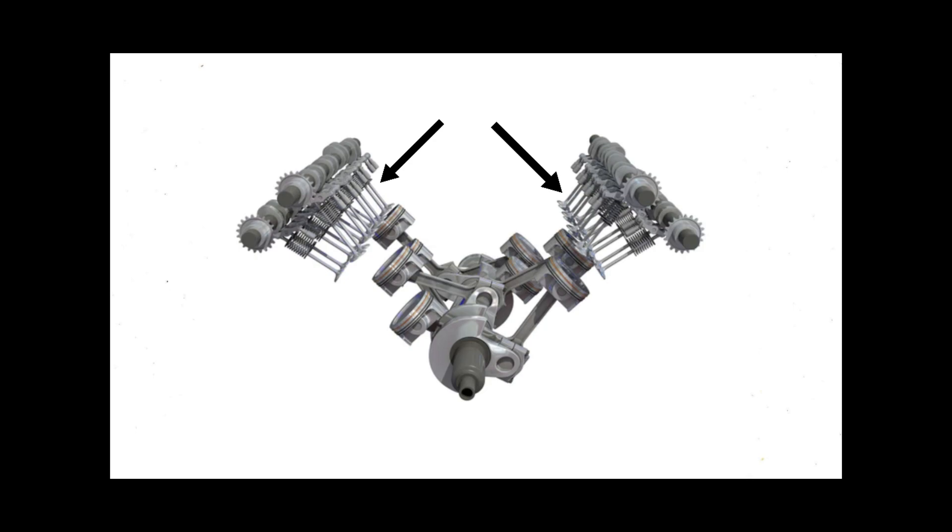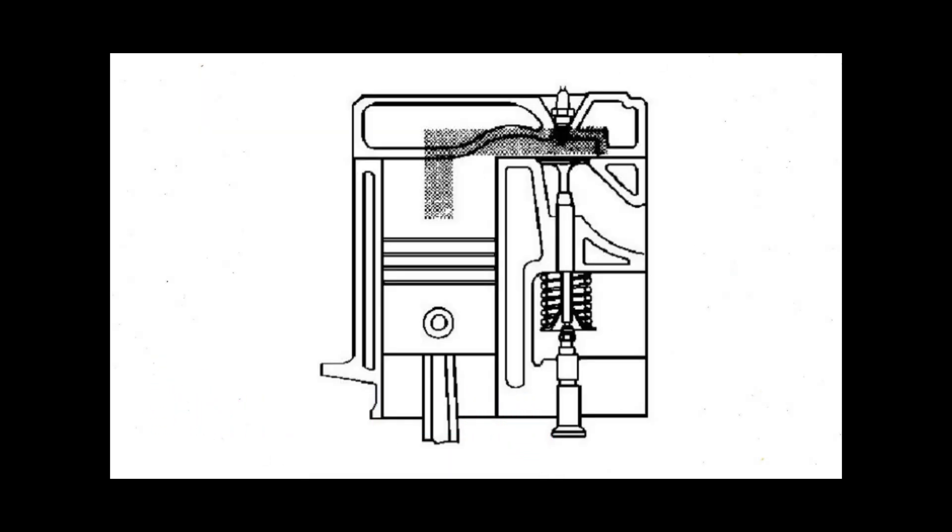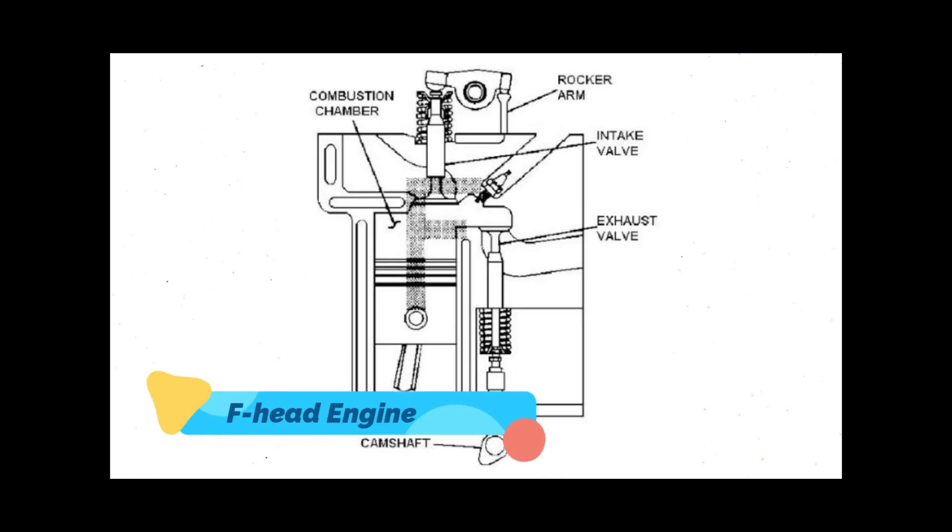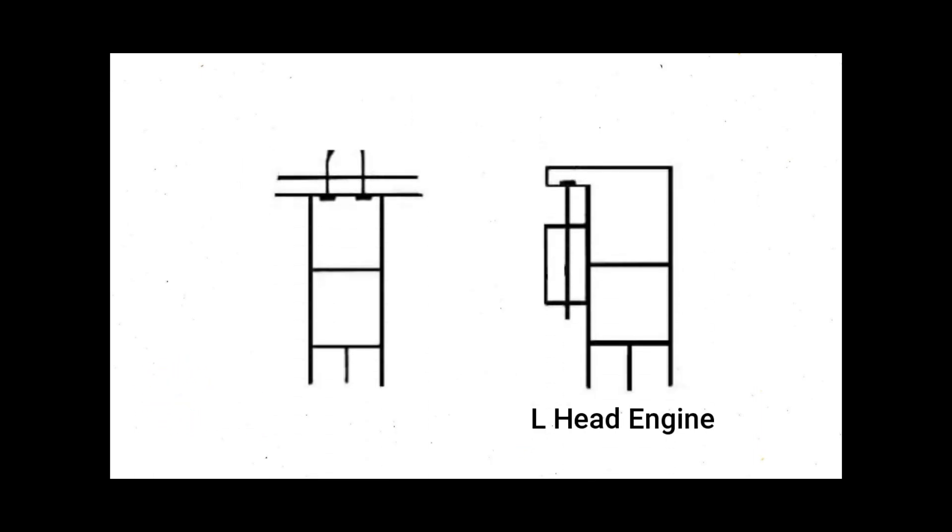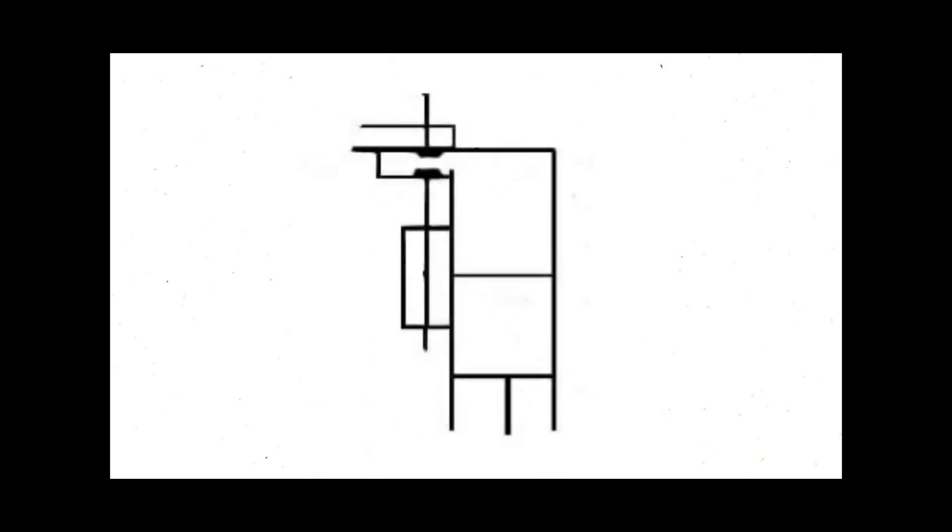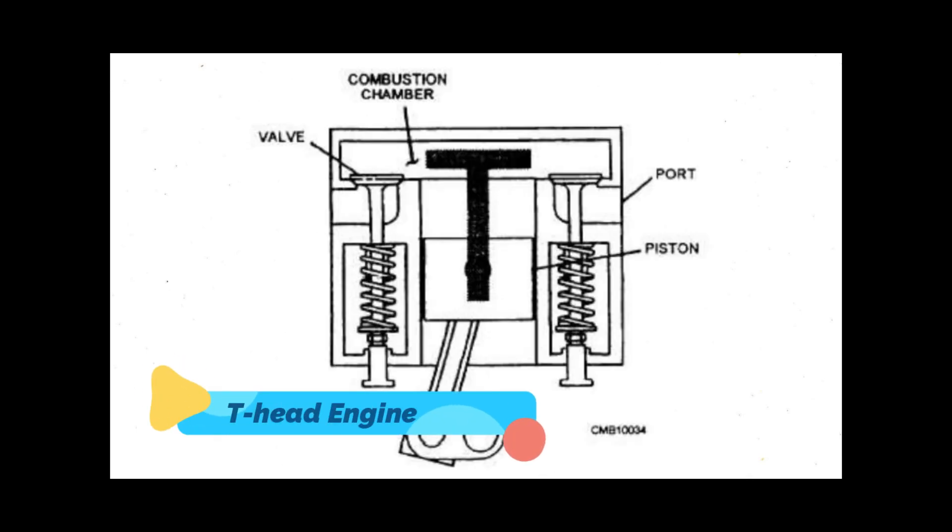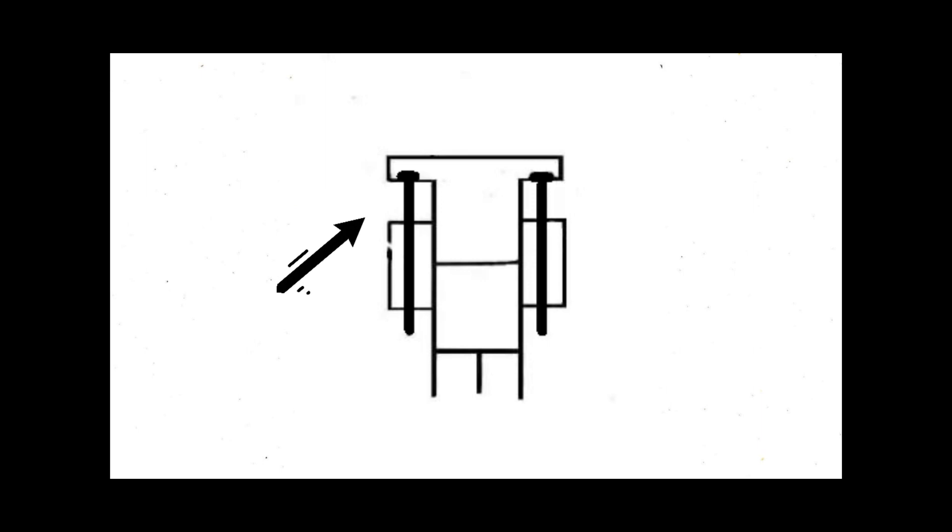In an L-head arrangement, the inlet and exhaust valves are located side by side and operated by a single camshaft. The combustion chamber and cylinder form an inverted L. F-head engine combines L-head and I-head engines in which one valve, usually the inlet valve, is in the head and the exhaust valve is in the cylinder block. Both sets are driven from the same camshaft. The T-head engine has the inlet valves on one side and the exhaust valves on the other side of the cylinder, thus two camshafts are required to operate them.